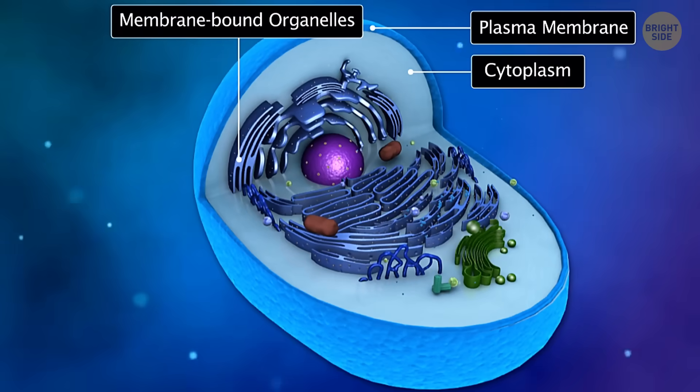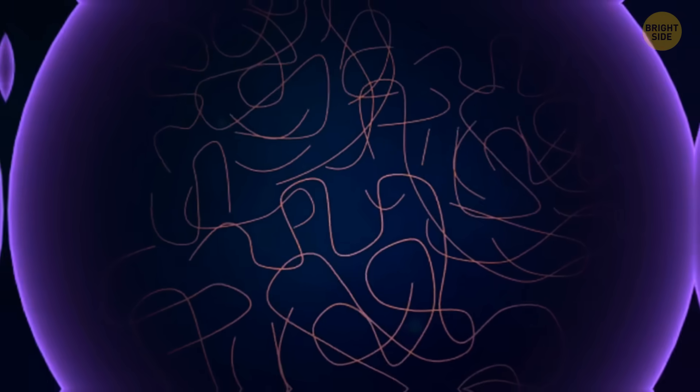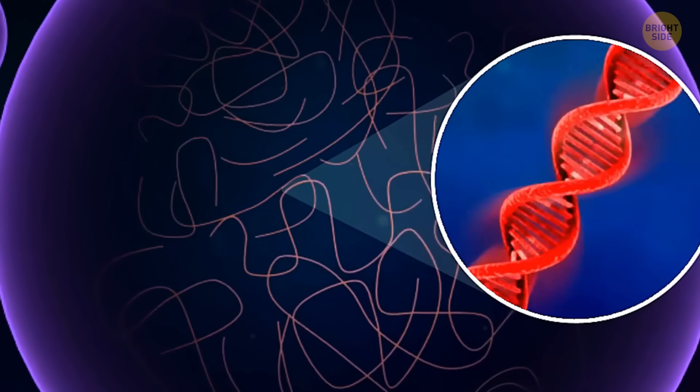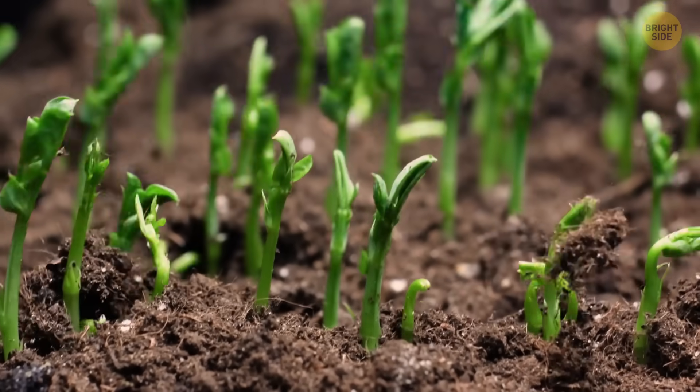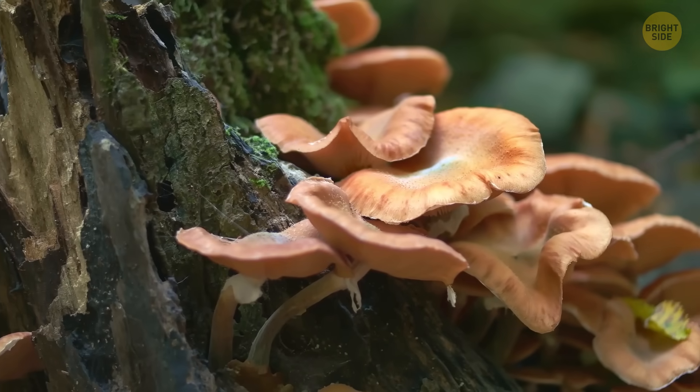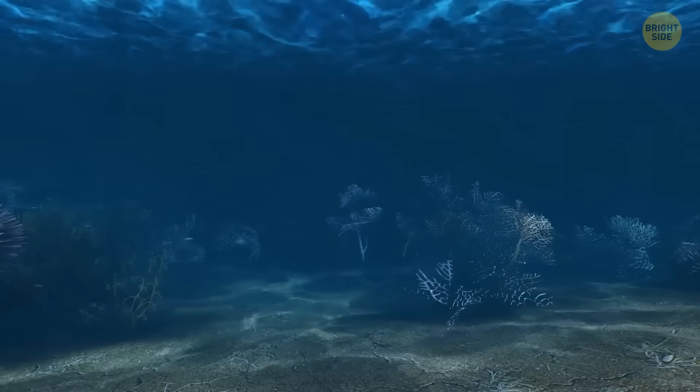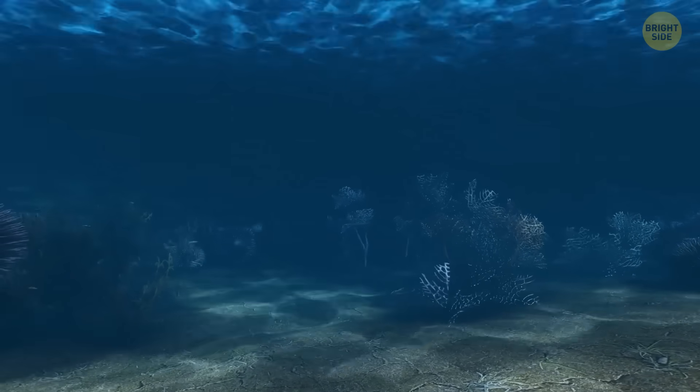Eukaryotes are living things with complex cells—cells that have parts inside them, like a nucleus that holds DNA. Every animal, plant, and fungus on Earth comes from these kinds of cells. So when eukaryotes appeared, it was a huge moment in the history of life.